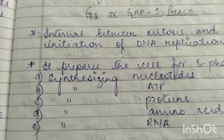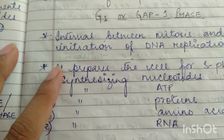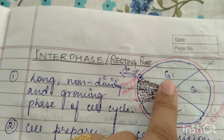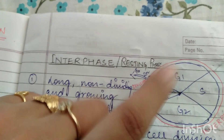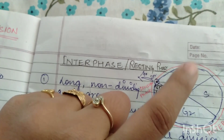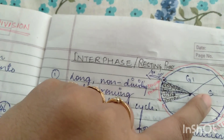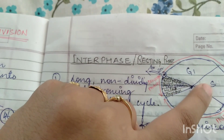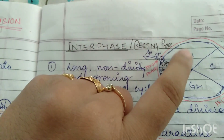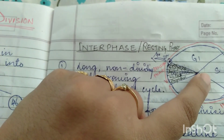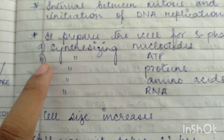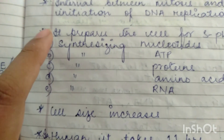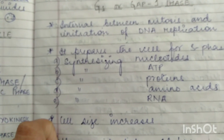G1 phase is called gap 1 phase. It is the interval between mitosis and initiation of DNA replication. It is the first phase where the cell prepares itself for S phase, since after G1 the cell will move to S phase. In G1, the cell prepares for S phase by synthesizing nucleotides, ATP, proteins, amino acids, and RNA. As all this synthesis takes place, the cell size increases. In humans, the G1 stage takes 11 hours.